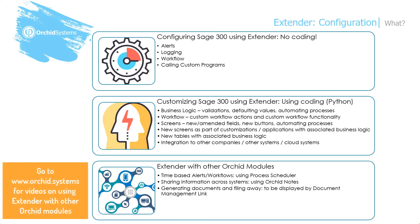Extender works very well with Orchid modules. For time-based alerts or workflows, you can use Process Scheduler to schedule an Extender script. For sharing information across systems and for rich context-sensitive notes, you can use Extender with Orchid Notes. And you can use Extender to generate documents and file them in the appropriate place to be displayed by Document Management Link.